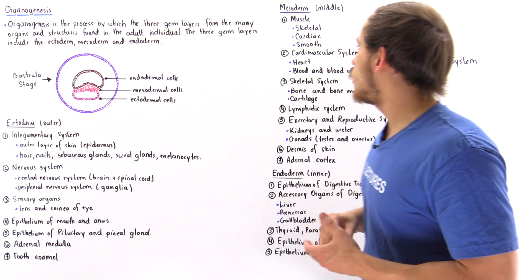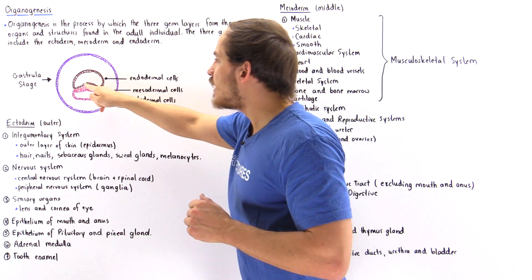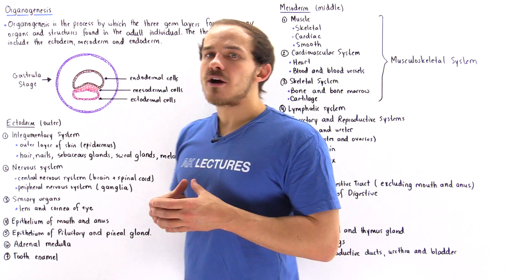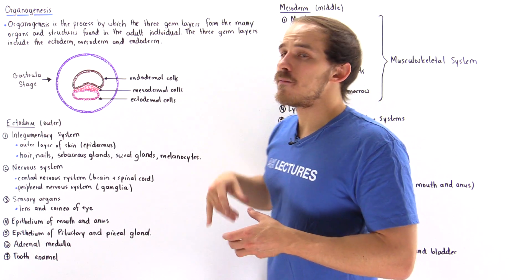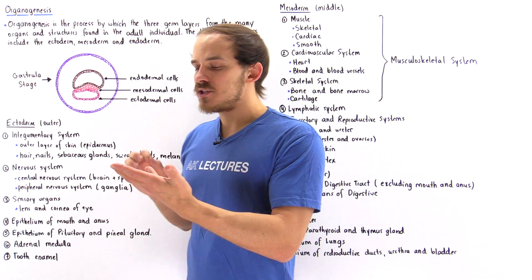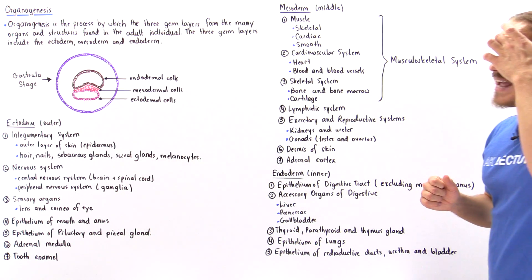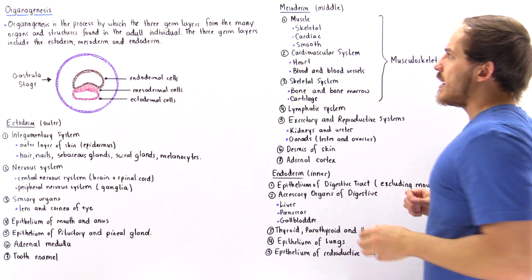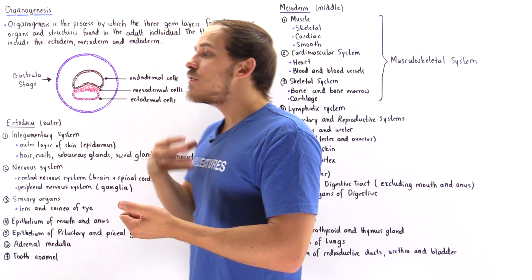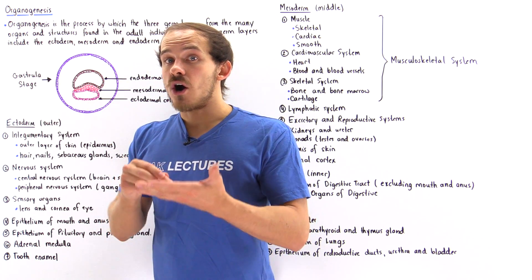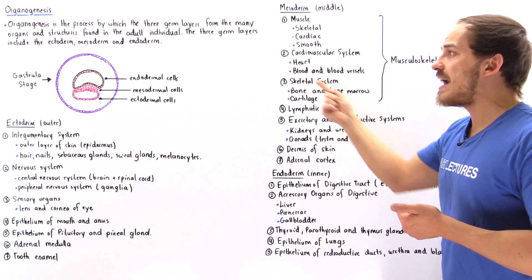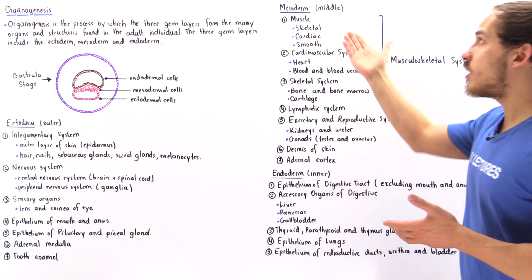Now let's move on to the middle red cells that make up the mesoderm germ layer. Essentially, many organs and structures found between the two layers are formed from the mesoderm. That includes all different types of muscles — skeletal muscle, cardiac muscle, and smooth muscle are formed from the mesoderm. That's easy to remember because both mesoderm and muscle begin with the letter M. Since we form cardiac muscle and smooth muscle from the mesoderm, the entire cardiovascular system — including the heart and blood vessels — is also formed from the mesoderm.